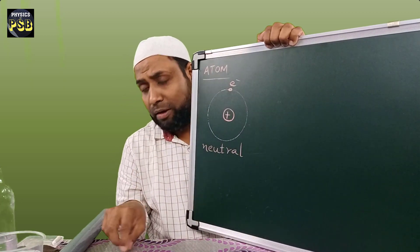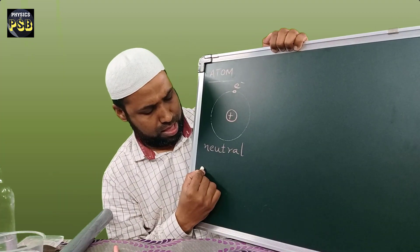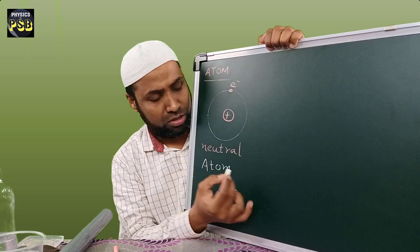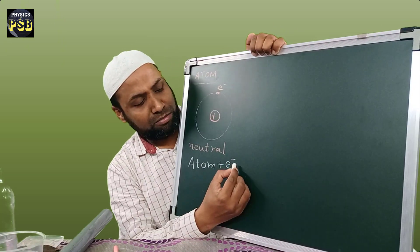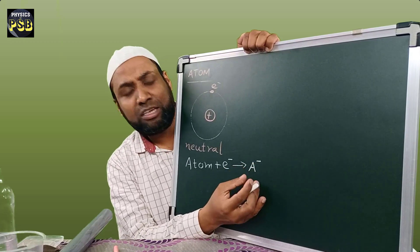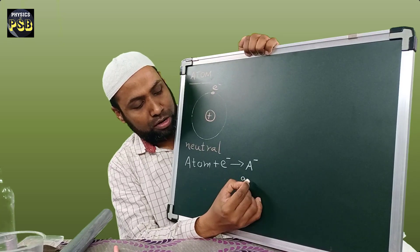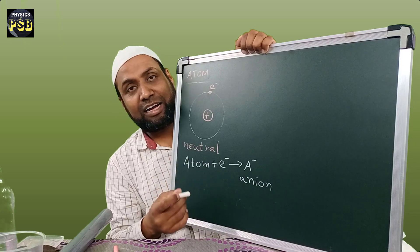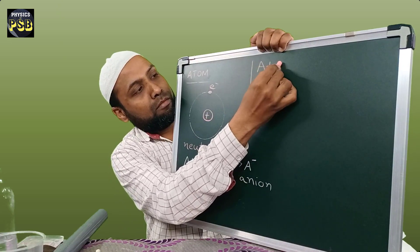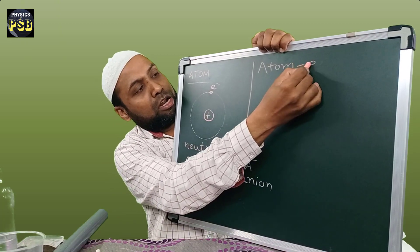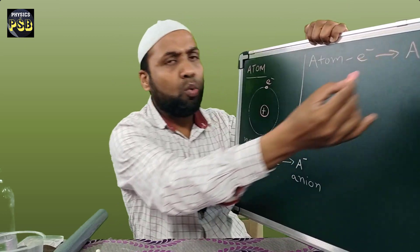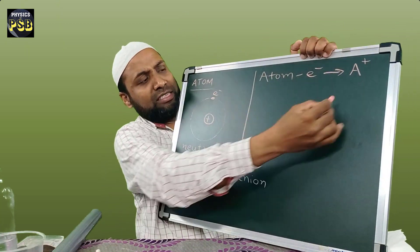When we rub two objects together, atoms either gain electrons or give electrons to another object. If an atom gains an electron, it becomes negatively charged due to the increase in the number of electrons — we call such a negatively charged atom an ion. If the reverse occurs and an atom gives out an electron, it will become positively charged. One such positively charged atom is referred to as a cation.